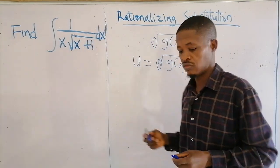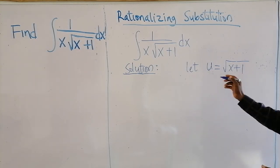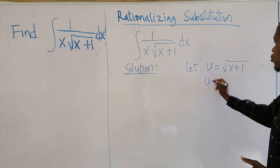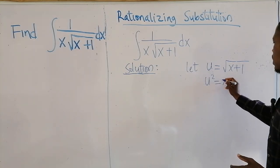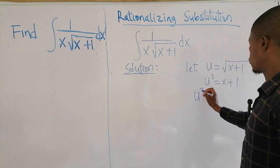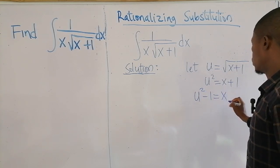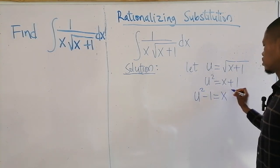Find the integral. Step 1: let u be equal to the square root expression. Then you can square both sides, so we have u squared equal to x plus 1, and therefore u squared minus 1 equals x.